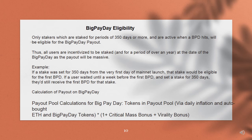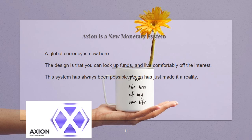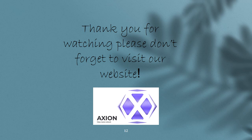The payout pool calculation for Big Pay Day includes tokens via daily inflation and auto-bought ETH, multiplied by (1 + critical mass bonus + virality bonus). Axion is a new monetary system — a global currency is now here. The design is that you can lock up funds and live comfortably off the interest. This system has always been possible, and Axion has just made it a reality. Thank you for watching — please don't forget to visit our website.